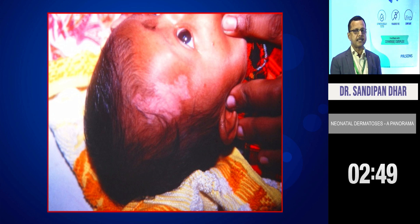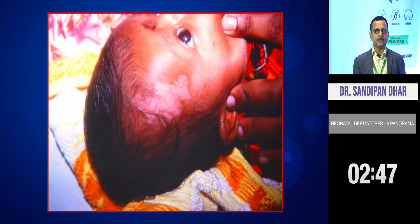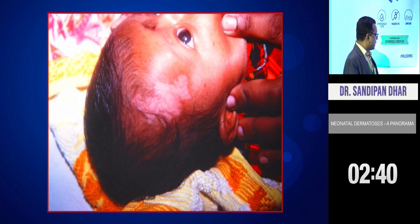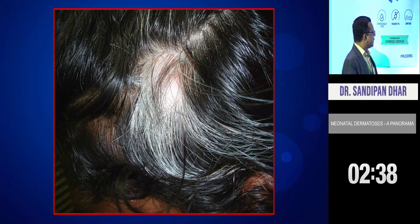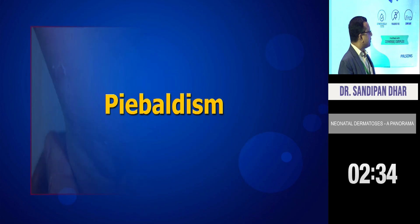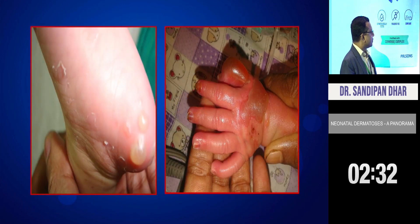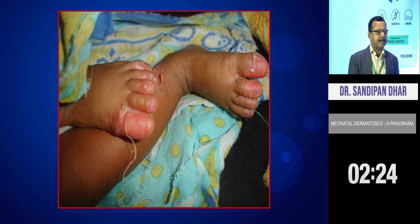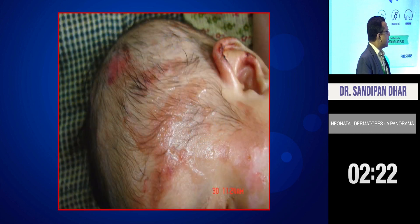This type of presentation is not very uncommon. You have to look at the scalp and see whether there is any white tuft of hair and white patch — this is piebaldism. But please remember that it is not only the hair and scalp; piebaldism can be there on other parts of the body also. This is not very uncommon in practice — baby presenting with blister-like lesions and total destruction of the nails, which is anonychia.